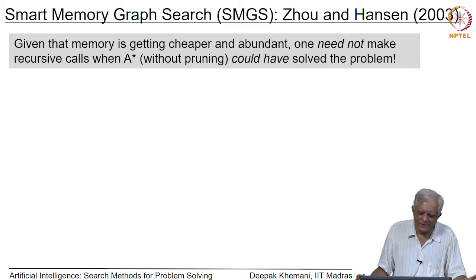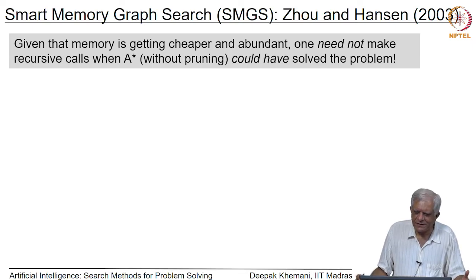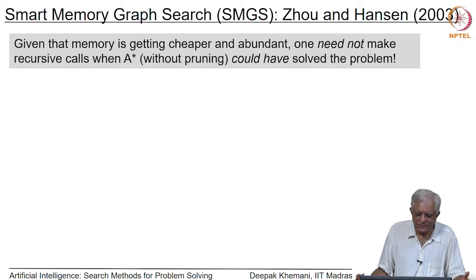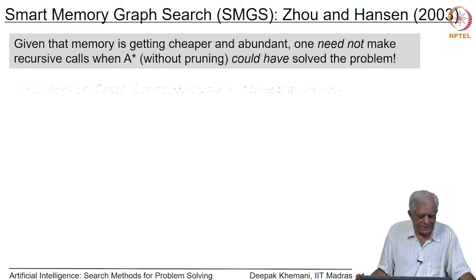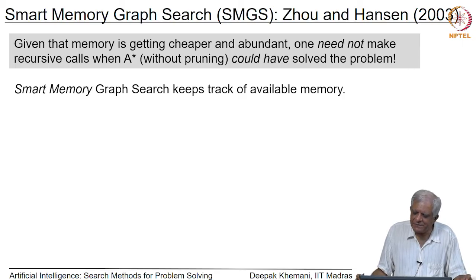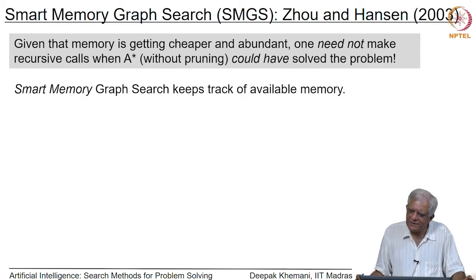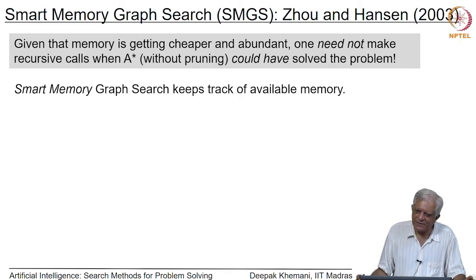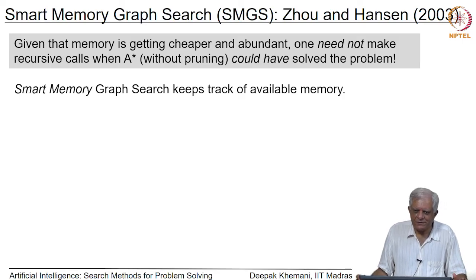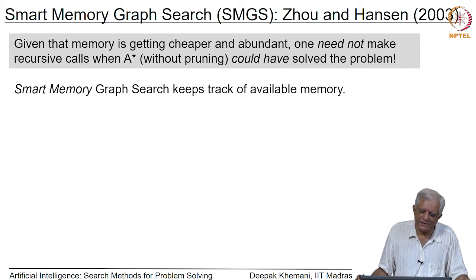What if A* for example, without any pruning, could have solved the problem? Then we would not have a space problem — we would have enough memory in our machine to solve A*. What is the point of doing that extra work? If you have enough memory and you are still trying to do this recursive divide and conquer process, that is wasteful.